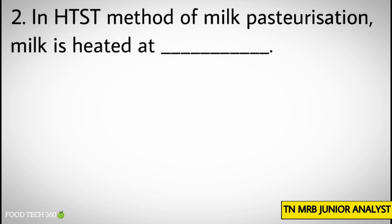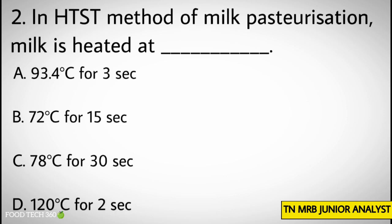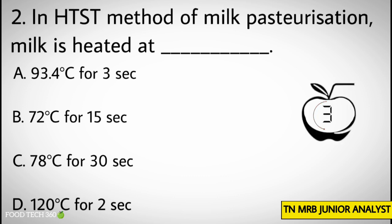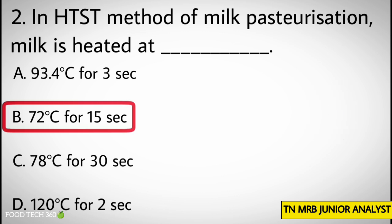Question number 2: In the HDSD method of milk pasteurization, milk is heated at dash. Options: A. 93.4 degrees Celsius for 3 seconds, B. 72 degrees Celsius for 15 seconds, C. 78 degrees Celsius for 30 seconds, D. 120 degrees Celsius for 2 seconds. Correct answer: B. 72 degrees Celsius for 15 seconds.